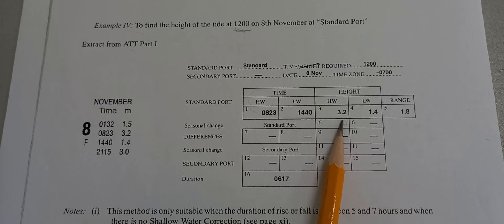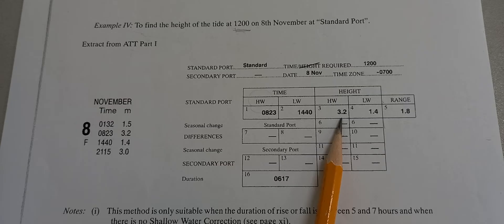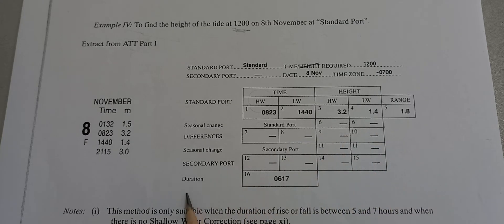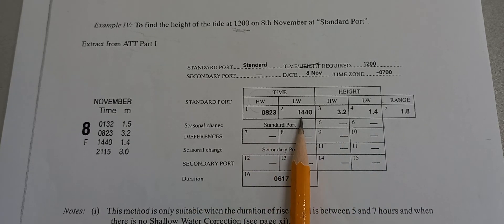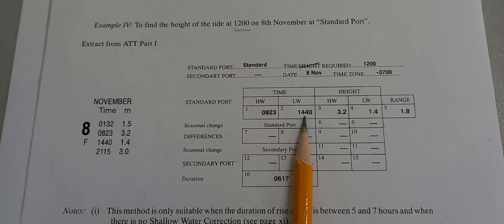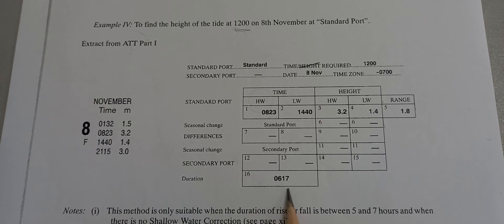The tidal range is simply 3.2 minus 1.4, which gives you 1.8 meters. For the duration, subtract 0823 from 1440, which gives you 6 hours and 17 minutes.